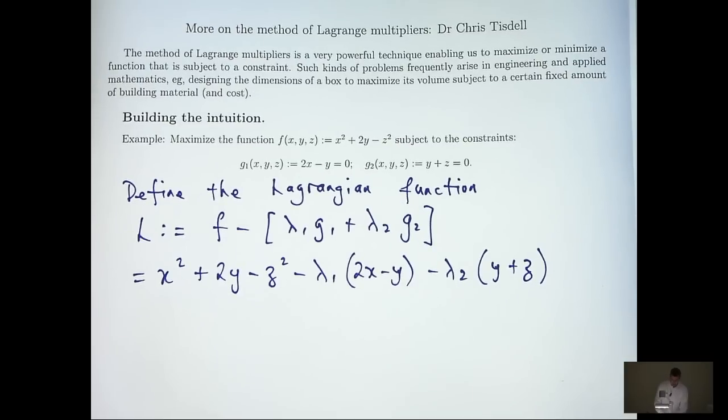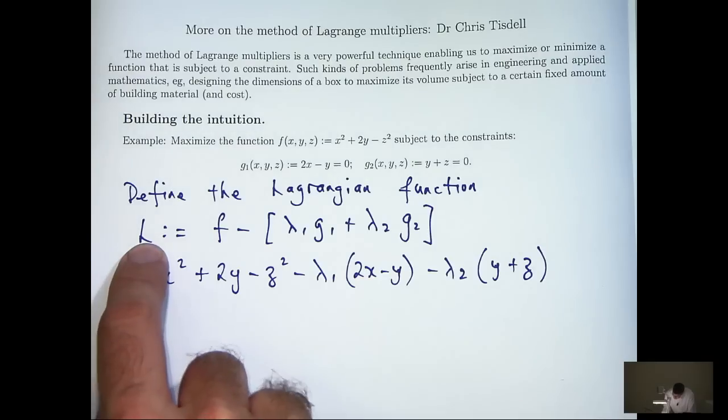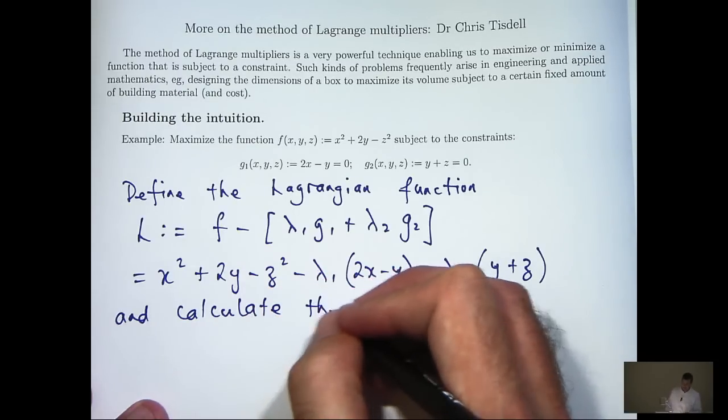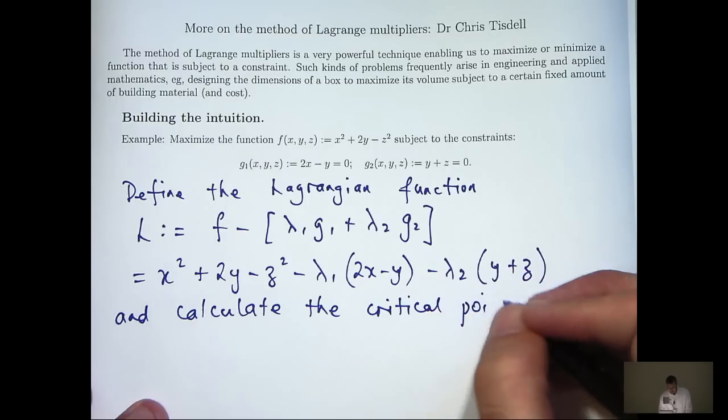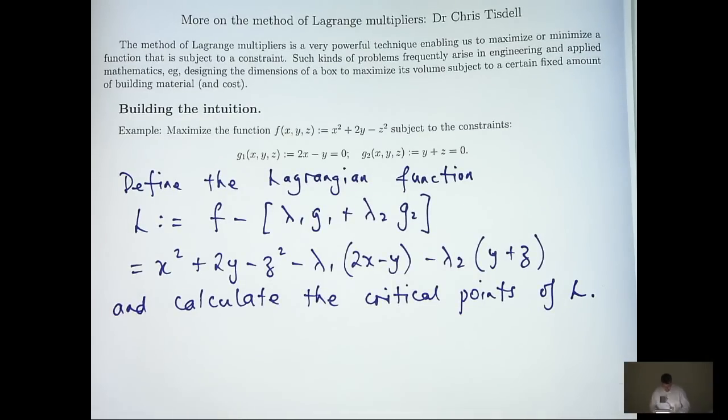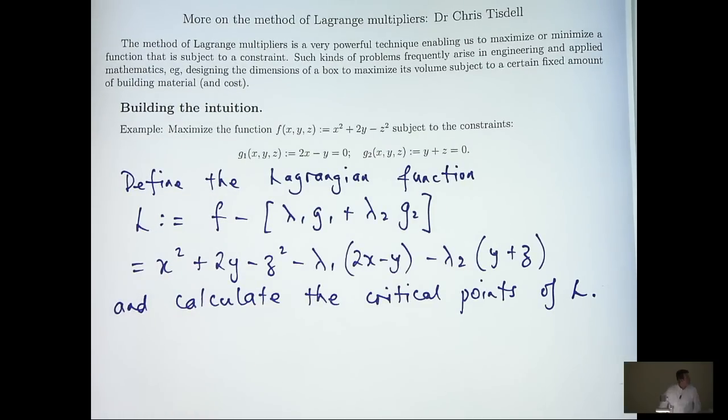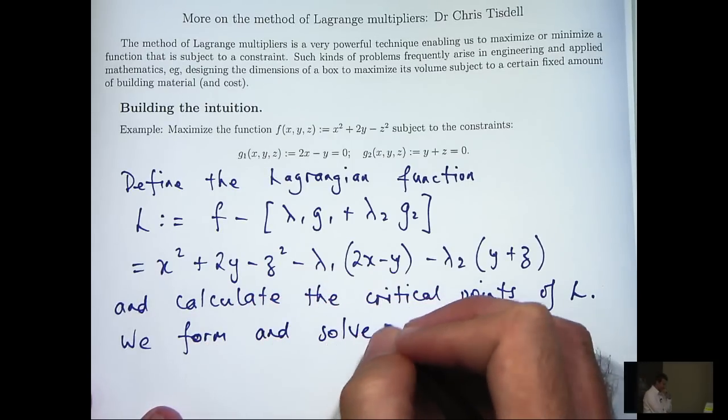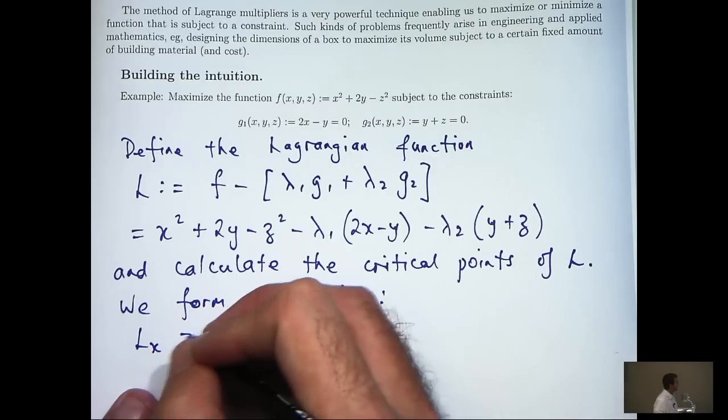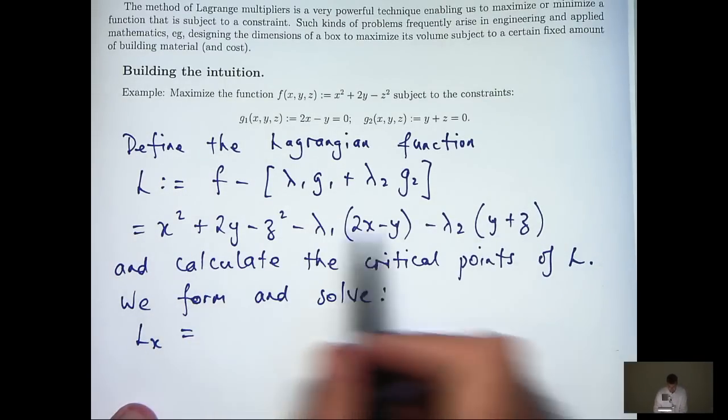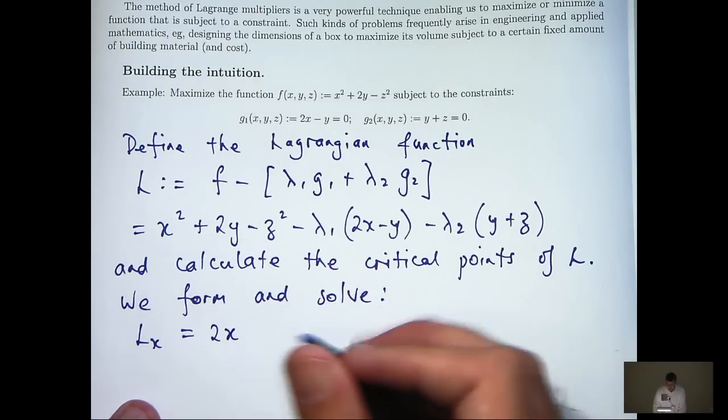And what the method of Lagrangian multipliers involves is actually calculating the critical points of L. Now, we know from calculus, to calculate the critical points, then what we do is calculate the partial derivatives of L and set them equal to 0 and solve. So let's form the partial derivatives of L, set them equal to 0, and then solve the resulting equations. Now, by a subscript here, I mean dL/dx, the partial derivative of L with respect to x. So we go up here, differentiate with respect to x, holding everything else a constant.